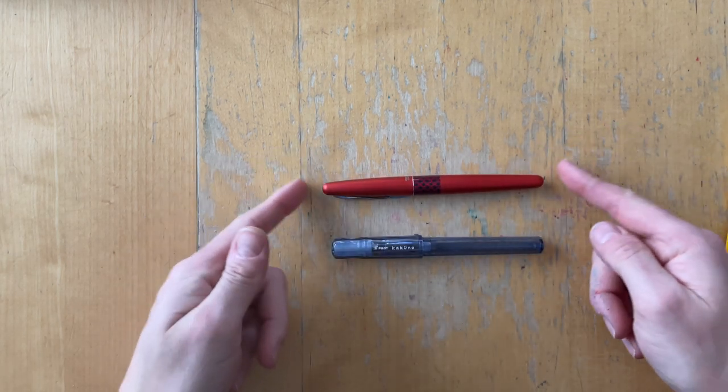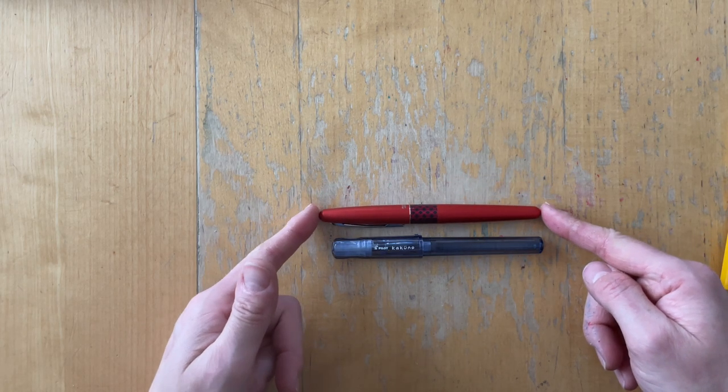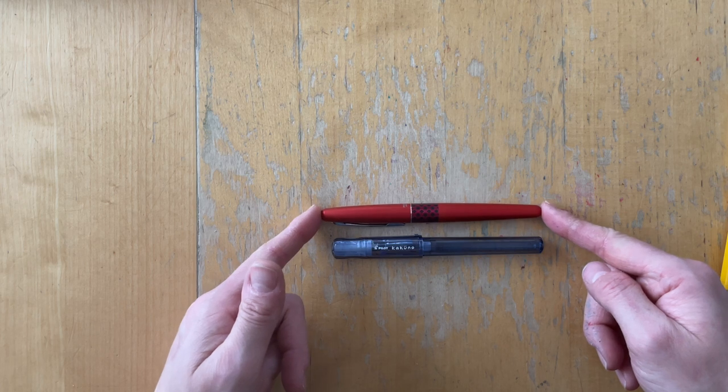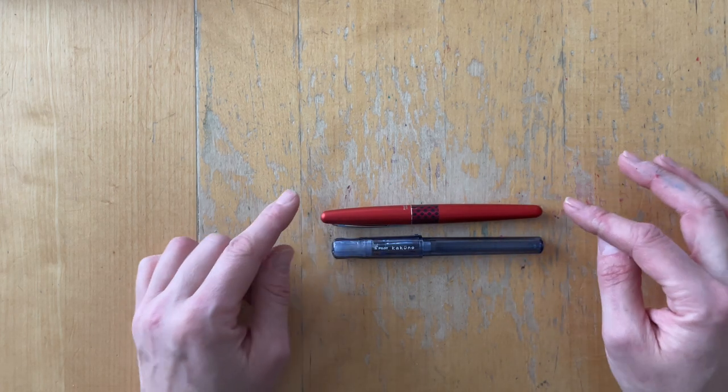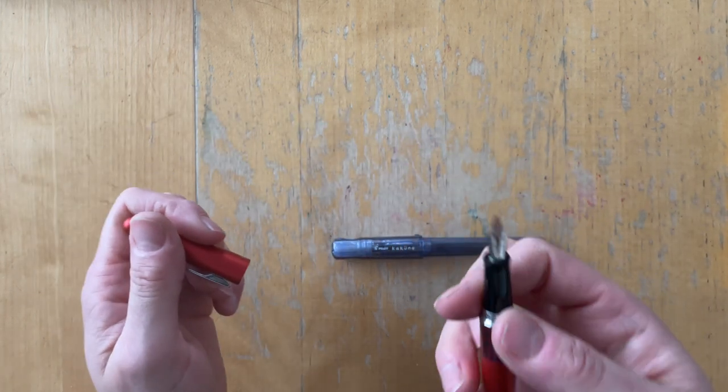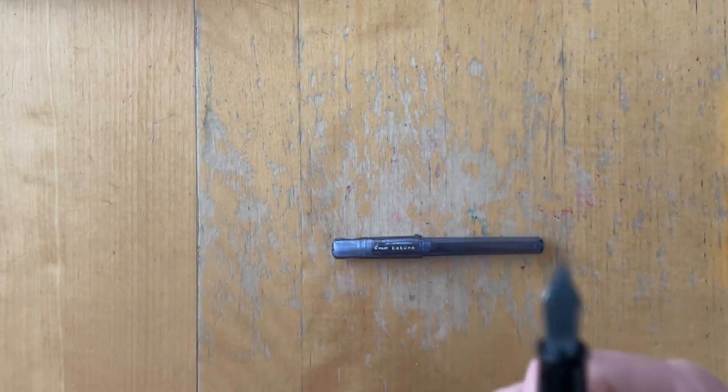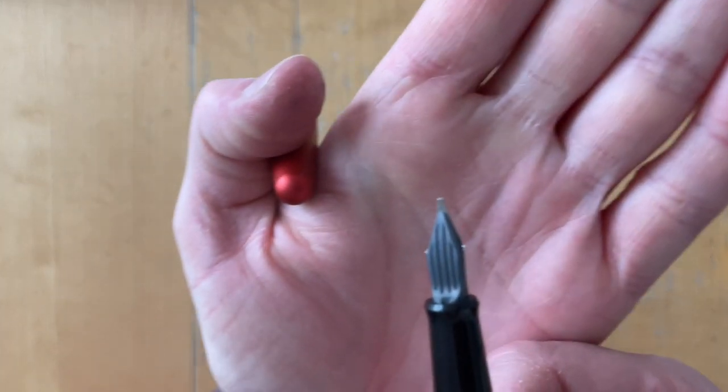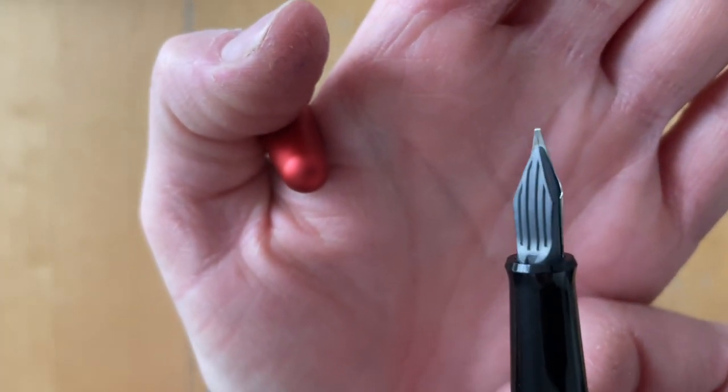Let's compare it to another Pilot beginner fountain pen that is in a similar price range, the Pilot Metropolitan. The one that I have here is the Pilot Metropolitan Retro Pop Red. This one comes in a calligraphy medium nib but you can see the feed is exactly the same.